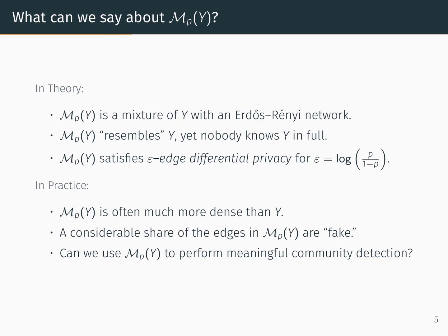So what can we say about our synthetic network? In theory we can say several nice things. We know that the synthetic network is a mixture of the original network with an Erdős–Rényi network. We can also say the synthetic network resembles the true network in some sense, yet we're able to create it without anyone actually knowing the true network in full. We can also say that the synthetic network satisfies epsilon edge differential privacy, where epsilon is the log odds of having flipped an entry in the adjacency matrix. In practice, however, we often notice that the synthetic network is much more dense than the true network, and a considerable share of the edges in the synthetic network are fake. So we might reasonably ask: can we use the synthetic network to perform meaningful community detection?